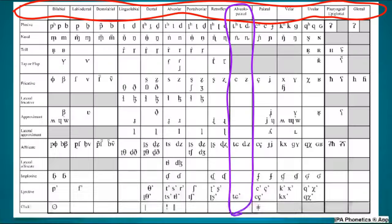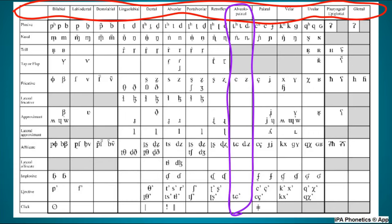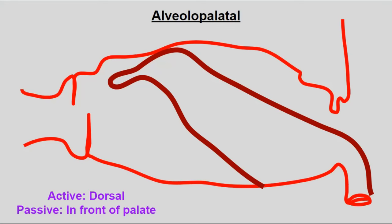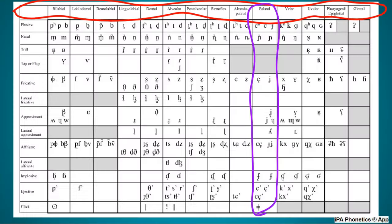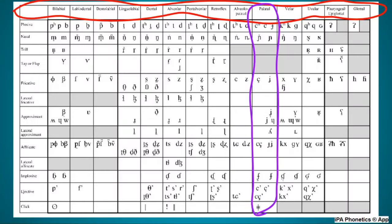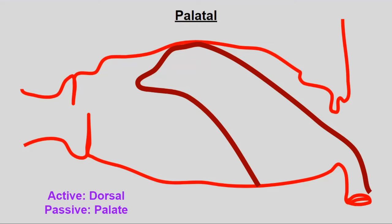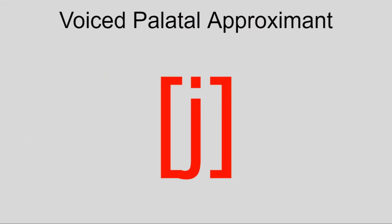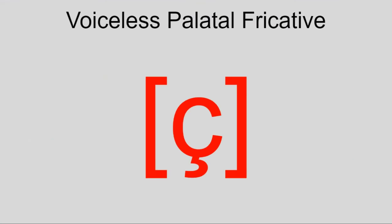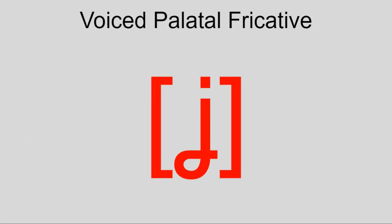The next step back brings us to alveolo-palatal, which describes the tongue being between the alveolar ridge and the palate — the hard part at the top of the mouth — most famously having its own SH and ZH sounds. Behind that is palatal. The most widespread sound of this place is Y, but there's also ɲ, c, ç, ʝ, and ʎ.